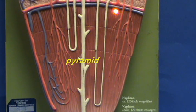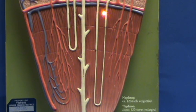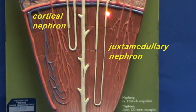Going all the way towards the tip of the pyramid, you can see here the difference between the cortical and the juxtamedullary nephron in that with the juxtamedullary nephron, the loop is much longer, has a much longer descending limb and a much longer ascending limb.